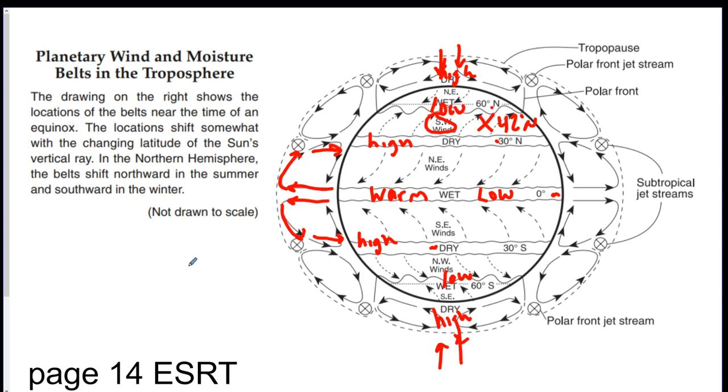The only other thing I would say to know about this chart is if the arrows are coming together, this is called converging. And if the arrows are going apart, that's called diverging. So for example, the air converges at the equator. See? The arrows are coming together.